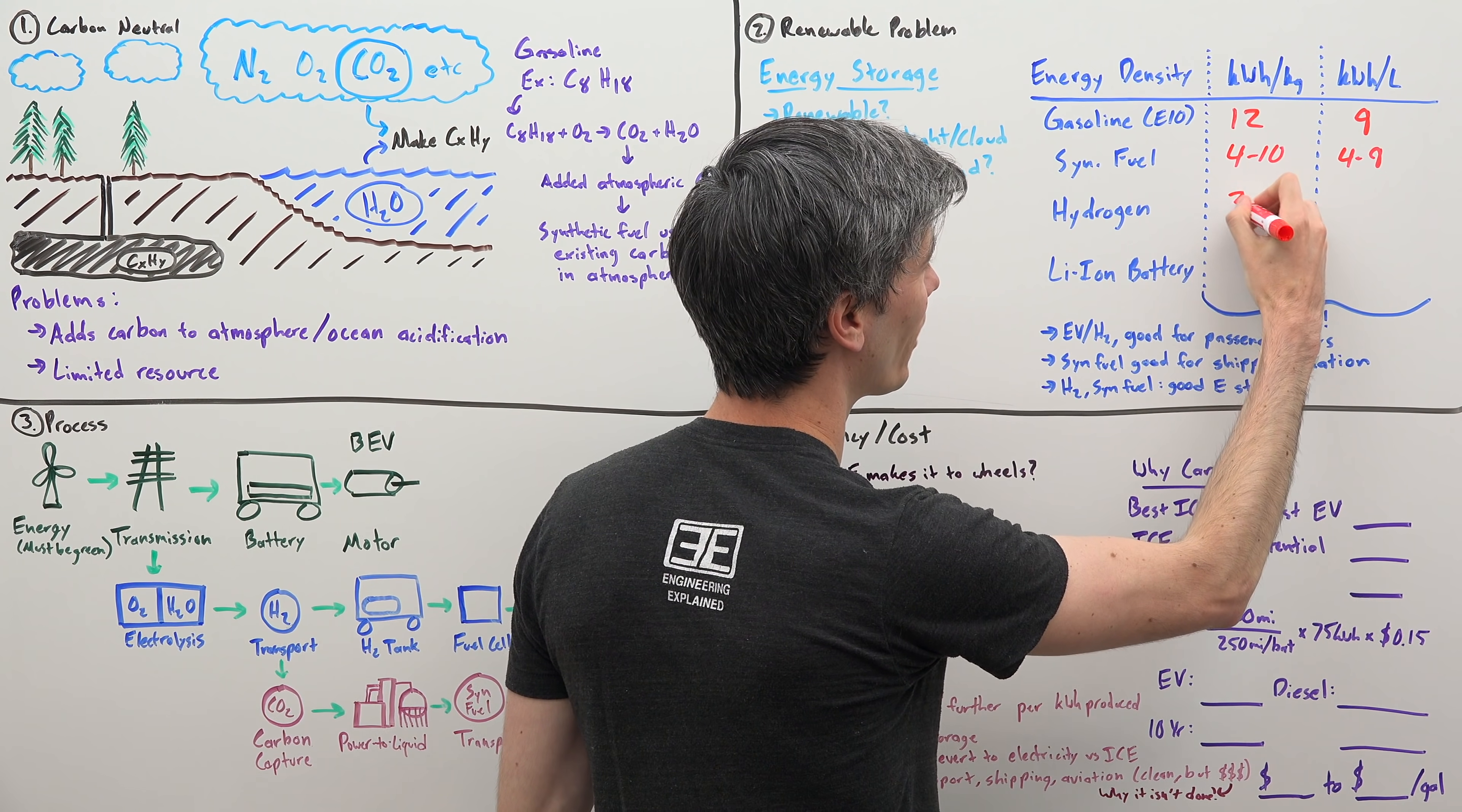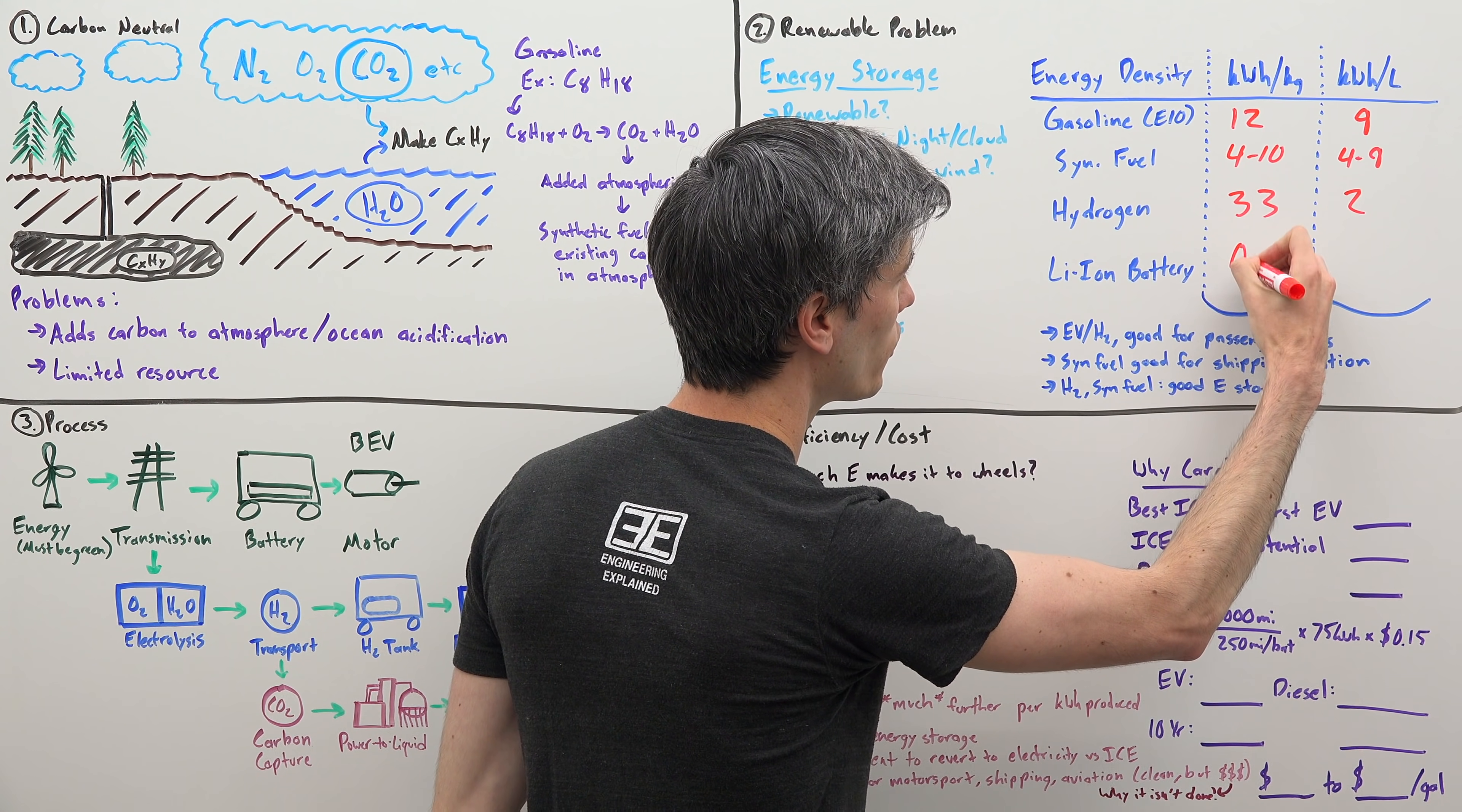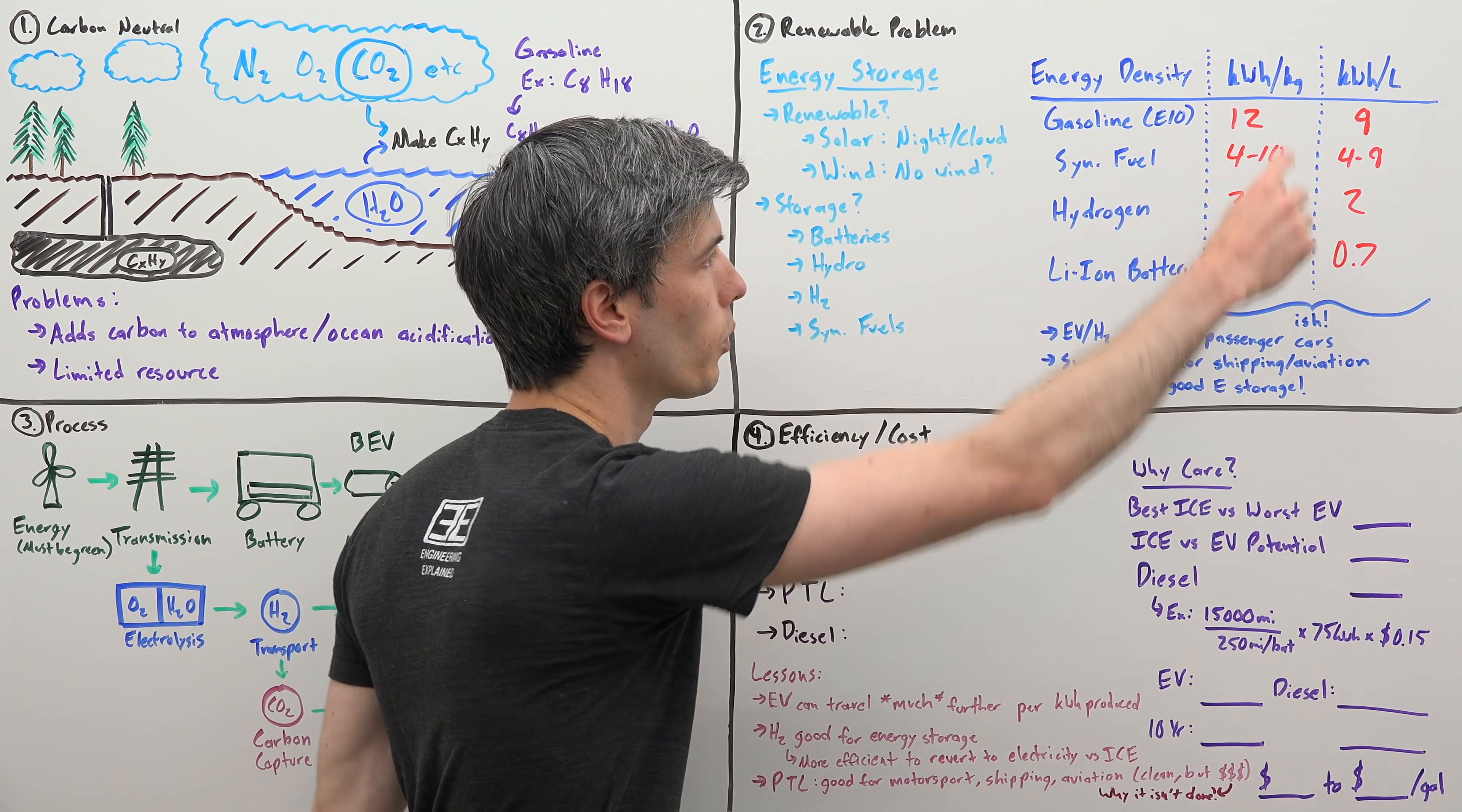Hydrogen has an energy density of 33 kilowatt hours per kilogram, meaning tons of energy by weight. Unfortunately, by volume, just 2 kilowatt hours per liter, meaning your tank has to be really big for hydrogen vehicles. And then lithium ion batteries, electric cars, here's where it really starts to make sense. Just 0.25 kilowatt hours per kilogram. So really poor energy density in a lithium ion battery. By volume about 0.7 kilowatt hours per liter. As you can see, there's a really big difference.